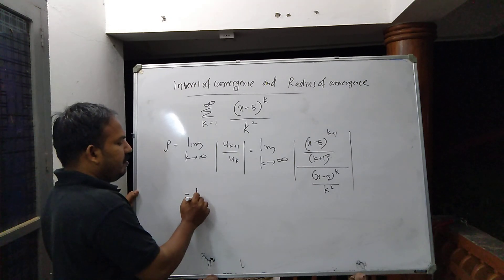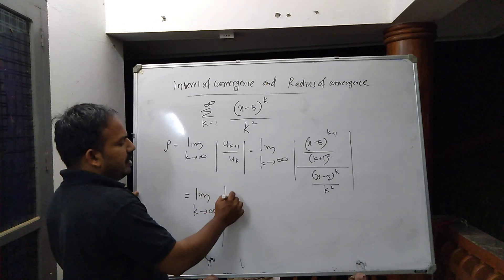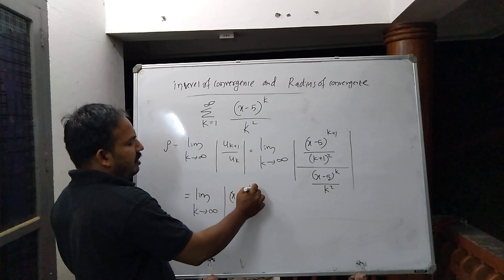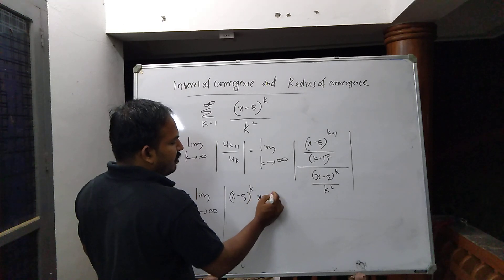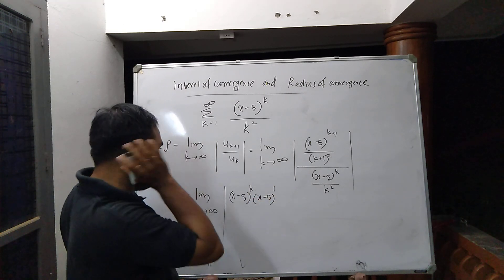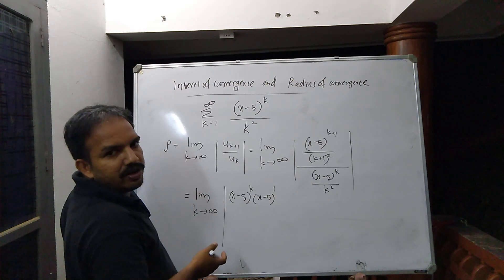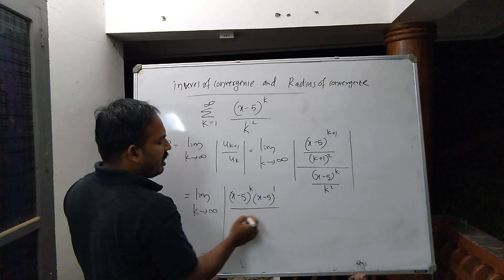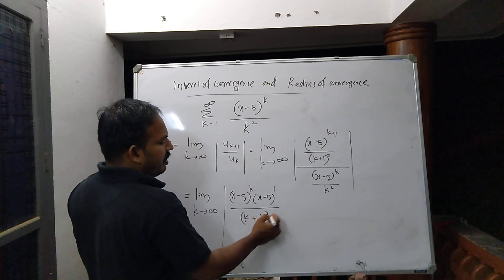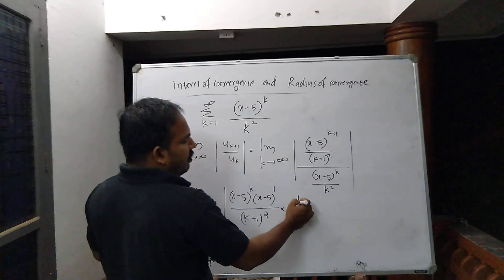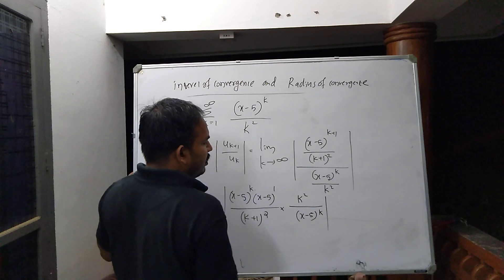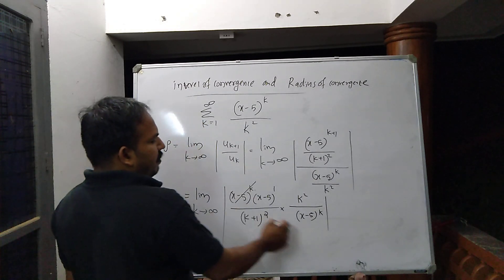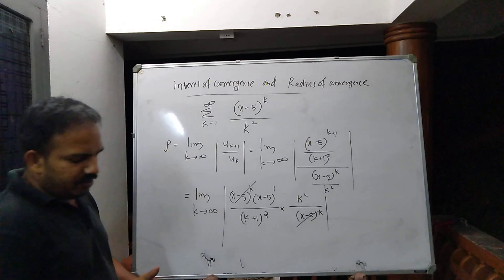So rho equals the limit as k tends to infinity of the absolute value of (x minus 5) to the power k plus 1, which we write as (x minus 5) to the k times (x minus 5) to the 1, divided by (k plus 1) squared, multiplied by k squared over (x minus 5) to the power k.